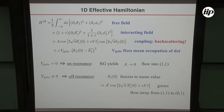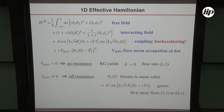When V gate equals zero — on resonance — the RG yields A goes to zero, so I flow to the (1,1) fixed point. If V gate is not equal to zero, I'm off resonance: this freezes to a mean value becoming a c-number, and the relevant operator grows, controlling the flow away from (1,1) toward (0,1). So let's look on resonance first. The goal is to find the current as a function of voltage bias to leading order in A and all orders in the fields. I'll do a golden rule calculation of this backscattering: I'll have perfect transmission and then correct it by the golden rule result, which is just tunneling in the presence of an environment.